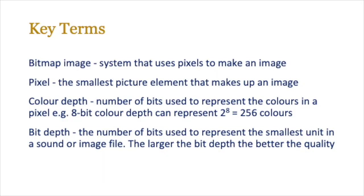On screen you're going to see a few key terms and you need to make sure that you jot these down. Make sure you know how to define a bitmap image and what a pixel is, which is the smallest element or dot that makes up an image. Make sure that you know the difference between bit depth and color depth. Bit depth is the number of bits used to represent the color of a pixel — for example, 8-bit, 2-bit, 16-bit, or 24-bit color. Color depth is how many colors you can get, so for 8-bit color you can get about 256 colors.